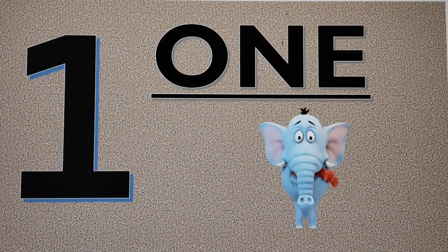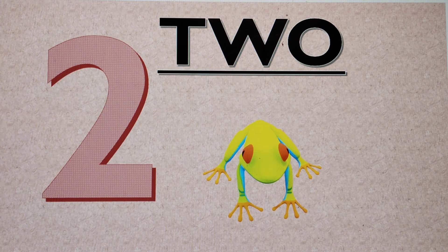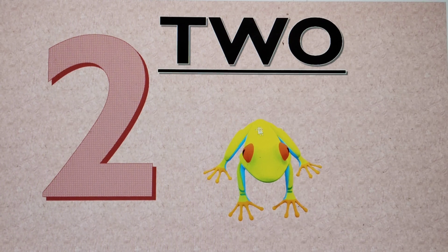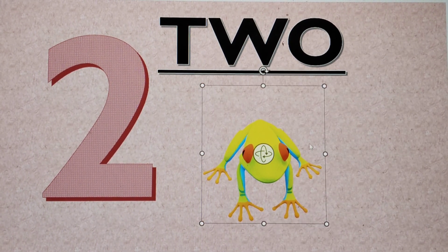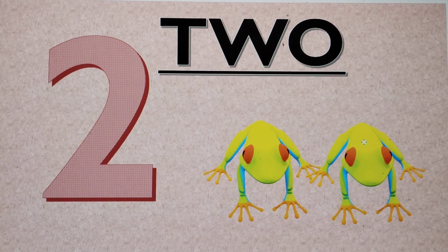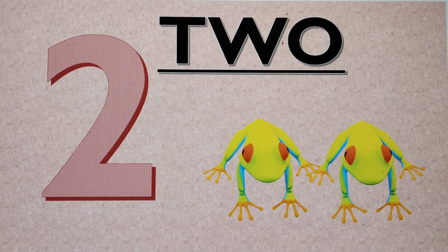Next number is number 2. This is number 2. T-W-O, 2. Let's make 2 frogs. 1 frog and this one is 2. These are 2 frogs: 1, 2.